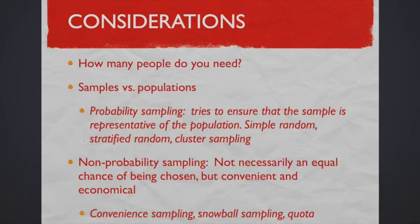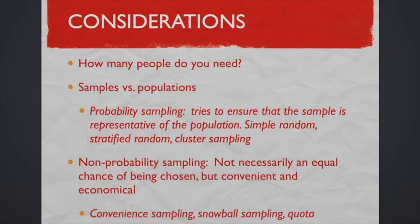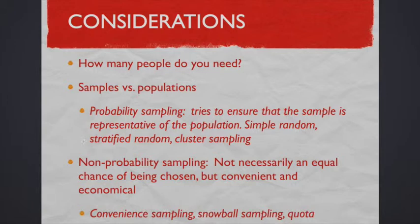Take a look at your text to learn more about those areas. Sometimes we don't do probability sampling — we need something quick and convenient, so we use non-probability sampling. This means there's not necessarily an equal chance of everyone being chosen, so it may not be representative of the population, but it is convenient and economical. Examples of non-probability sampling include convenience sampling, snowball sampling, and quota sampling. Probability sampling ensures equal representation; non-probability sampling does not.